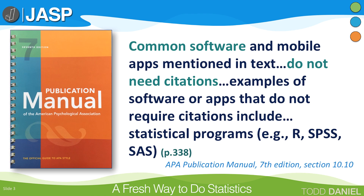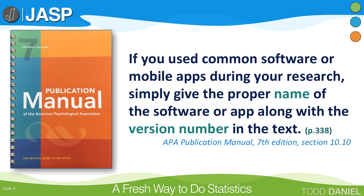According to the APA Publication Manual, 7th edition, common software and mobile apps mentioned in text do not need citations. If you used common software or mobile apps during your research, simply give the proper name of the software or app along with the version number in the text.